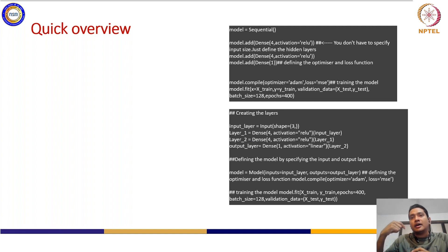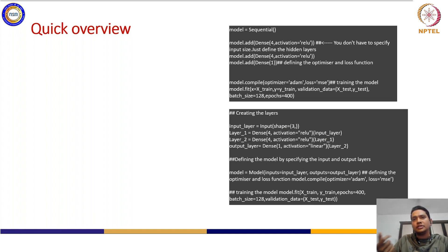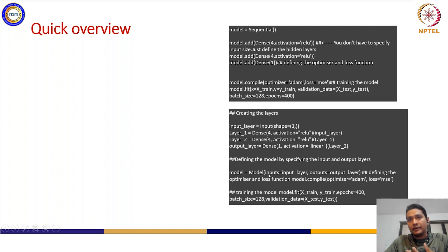These layers are essentially callable functions. You call layer one with the input layer, call layer two with layer one as input - layer one is essentially the output of that particular layer. Then you call the output layer with layer two. So you are defining these layers and calling them with the inputs you provide. The output layer will be the output of your network, then you define the model with: model = Model(inputs=input_layer, outputs=output_layer).